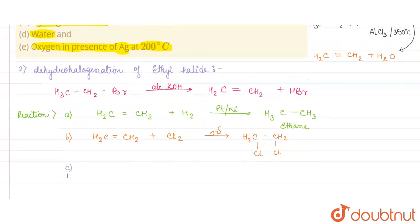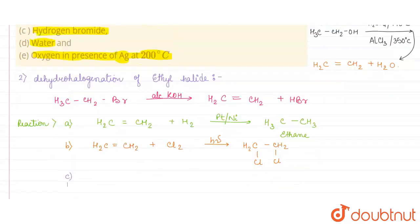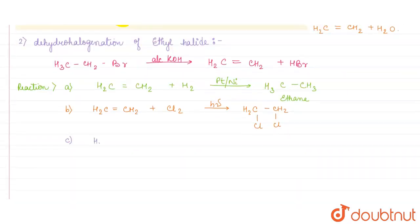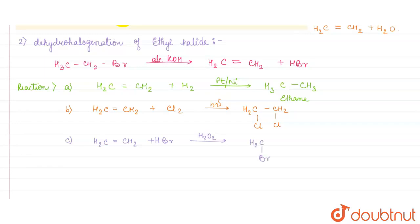Part (c) is the reaction with hydrogen bromide: CH₂=CH₂ reacts with HBr in the presence of hydrogen peroxide (H₂O₂), giving CH₂Br–CH₂Br — bromine is attached to both carbon atoms.